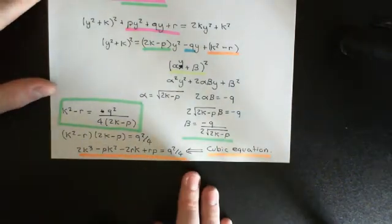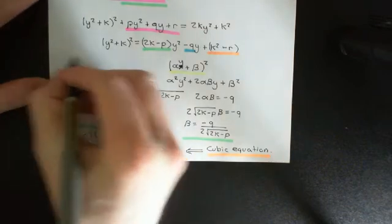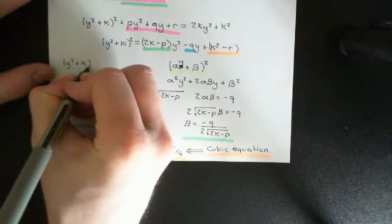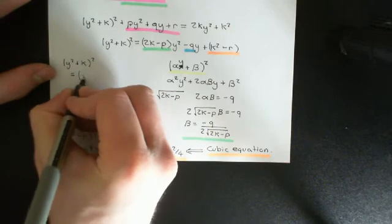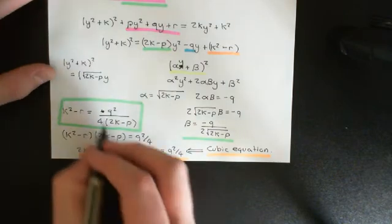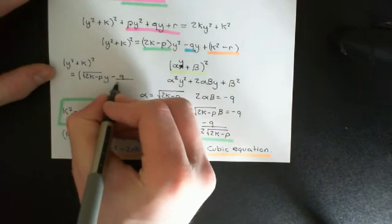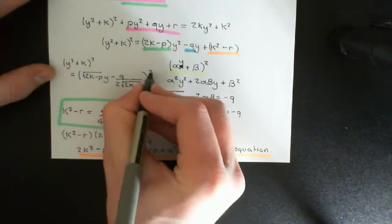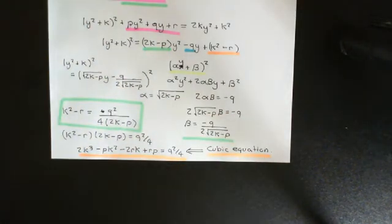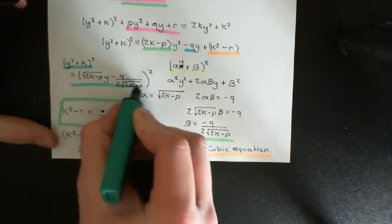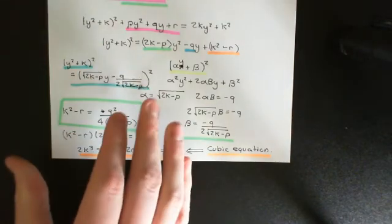If you can solve this equation and find the value of k, then our equation can now be reduced down to this form: y squared plus k squared equals the square root of 2k minus p times y, minus q over 2 times the square root of 2k minus p, all of that squared. So we can rewrite our equation like so, having picked k to be this very clever value such that this condition holds true.